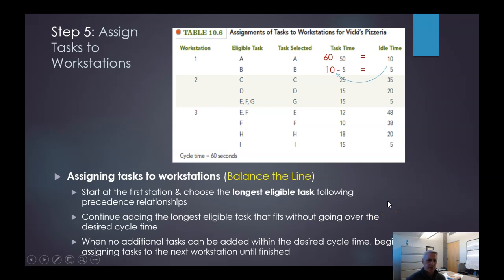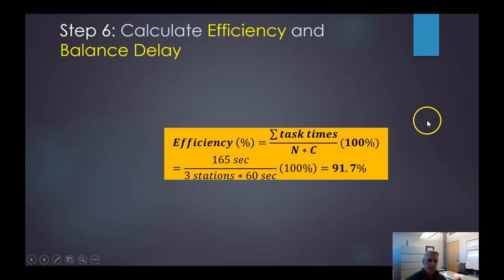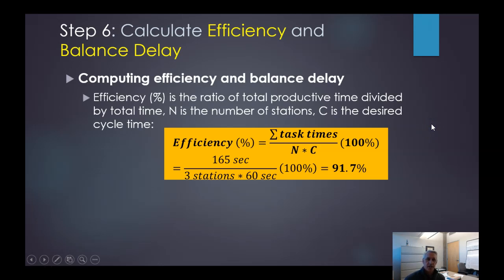And so that helps us balance the lines. So we start with the first station, choose the longest eligible task, and so on. When we have no more additional tasks, now we go to the next phase. It's like, okay, so how do we do? Computing efficiency, balancing delay. Efficiency is the ratio of the total productive time divided by the total time, where N is the number of stations that we have, now we've decided on 3, and C is the desired cycle time.